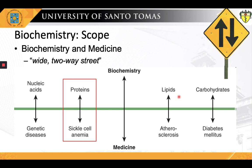We cannot overestimate the importance of the study of carbohydrates in leading the way to the diagnosis, management, and prevention of diabetes mellitus — and vice versa, the huge help that studying diabetes mellitus provides in understanding certain sugars. However, what could probably be the best and most classical example of the interrelationship of biochemistry and medicine is the study of proteins vis-à-vis sickle cell anemia. We will be exploring this interesting interrelationship in the next slide.